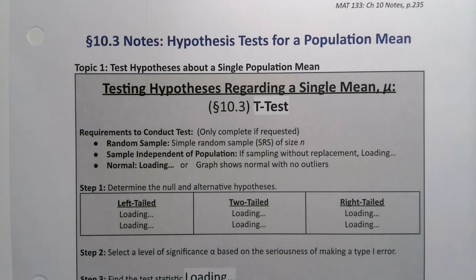In section 10.3, we want to be able to conduct a hypothesis test, but this time for a population mean, a single mean for a single population. In chapter 11, that'll be double means. We'll deal with that then.